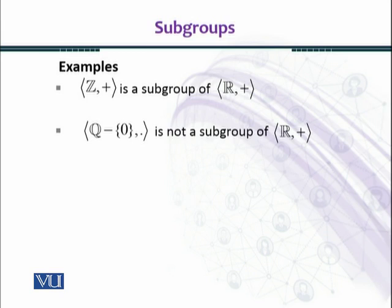If we consider a set of non-zero rational numbers under multiplication, it will form a group. But it will not be a subgroup of (R, +). The reason is that Q - {0} is a subset of R, but the binary operation we are using in the subset case is a different binary operation - usual multiplication. So (Q - {0}, ·) is not a subgroup of (R, +).